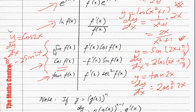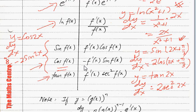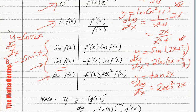To summarize: if y equals sin f(x), dy/dx equals f'(x) cos f(x). If y equals cos f(x), dy/dx equals minus f'(x) sin f(x). And if y equals tangent f(x), then dy/dx equals f'(x) sec squared f(x). You need to know all these formulas like the back of your hand.